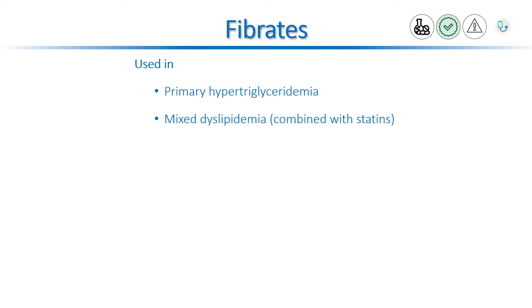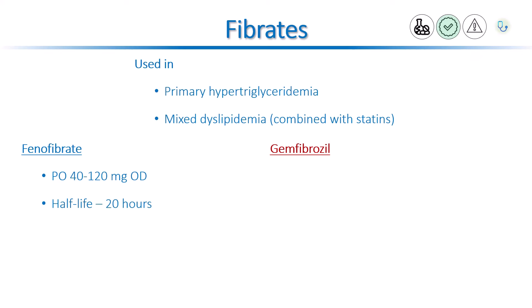Common medications in the fibrate class include fenofibrate and gemfibrozil. The initial dose of fenofibrate is 40 to 120 mg per day. Its half-life is 20 hours, hence once-a-day dosing is needed. Absorption is enhanced by food. Fenofibrate is a prodrug, converted to fenofibric acid in the tissues.